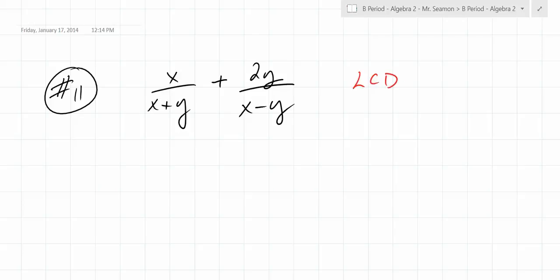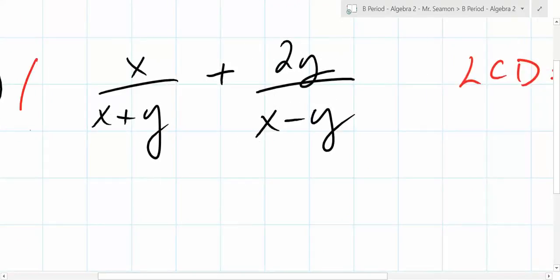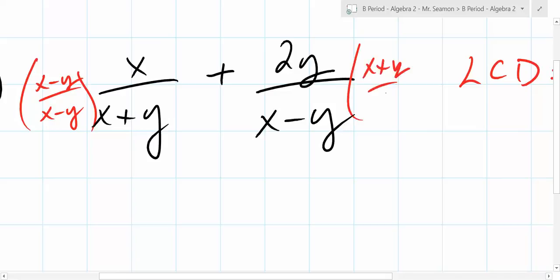So what's our least common denominator? We like finding the least common denominator because it's smaller, generally easier. What's our least common denominator going to be, Kelly? X plus Y times X minus Y. Yeah, X plus Y times X minus Y. So to add these together, we're going to multiply this one by X minus Y over X minus Y and this one by X plus Y over X plus Y.